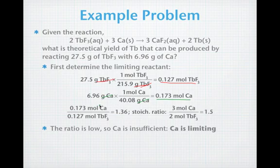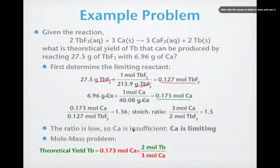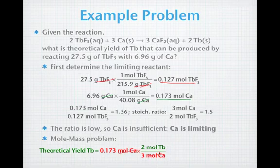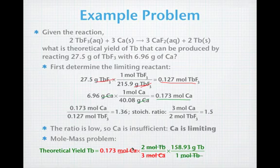And so we can just now do a theoretical yield calculation, a mole-to-mass problem, starting with our limiting reactant, which is the calcium, 0.173 moles of calcium. Our theoretical yield of terbium in grams is what we're looking for. Take our mole ratio, 2 moles of terbium to 3 moles of calcium. Let's cancel out the moles of calcium. Now we need the molar mass of terbium. So we're going to multiply by 158.93 grams of terbium, cancel out the moles of terbium. And our theoretical yield is 18.4 grams of terbium.